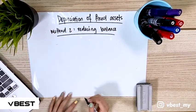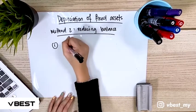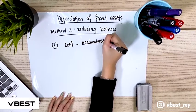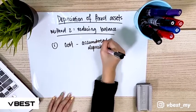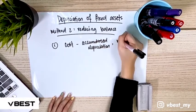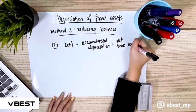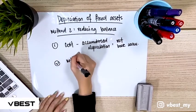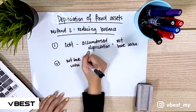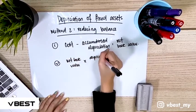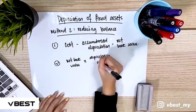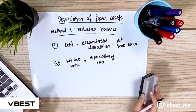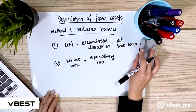For this method, the formula is: first we need to find cost minus accumulated depreciation, and the answer we get is our net book value. Once we have the net book value, we multiply it by the depreciation rate to get our depreciation amount. Now we will look at some examples of the reducing balance method.